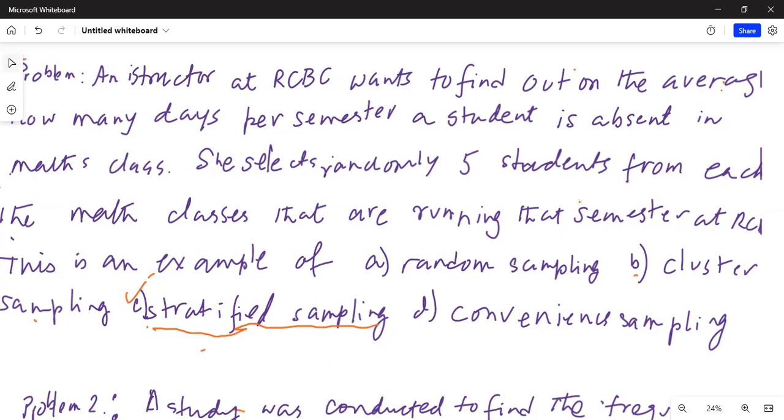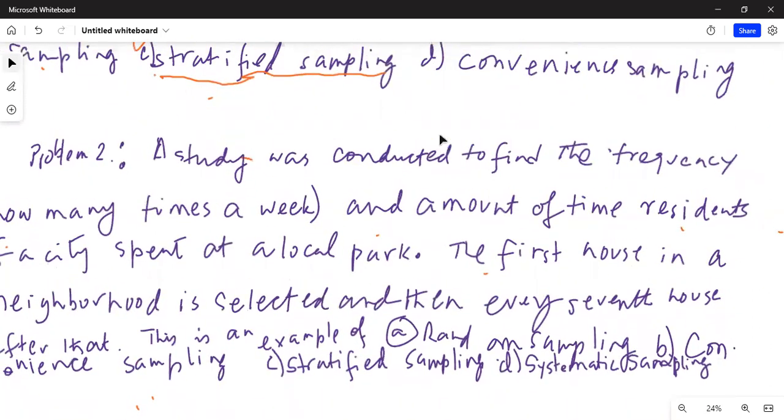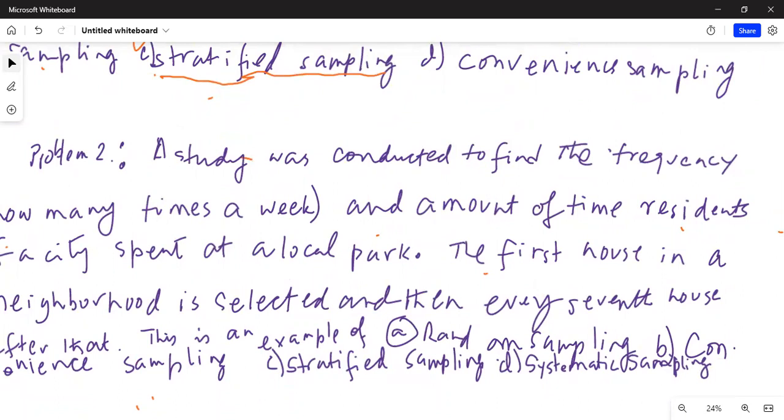So now we will move to the next problem, which is also another problem on sampling. The study was conducted to find the frequency, that is how many times a week, and the amount of time residents in a city spend at a local park. The first house in a neighborhood is selected and then every seventh house after that is selected. This is an example of what?